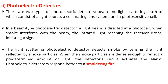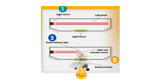In the light scattering photoelectric type detector, the sensor and the emitter are placed perpendicular to each other. Under normal conditions, the sensor receives no light. Whenever smoke enters the detector, the light is scattered and reaches the sensor, giving an alarm indication. This scatter type photoelectric detector works such that when smoke enters, scattered light passes to the sensor, which triggers an alarm condition.